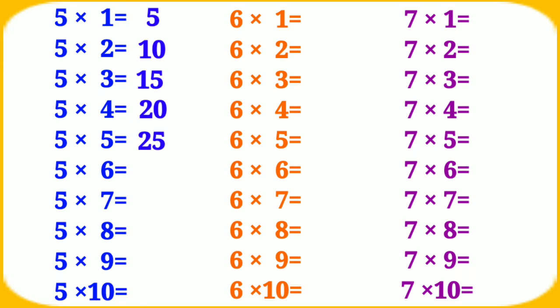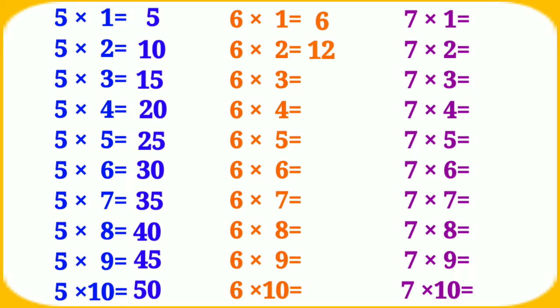5 sixes are 30, 5 sevens are 35, 5 eights are 40, 5 nines are 45, 5 tens are 50. Table of 6: 6 ones are 6, 6 twos are 12, 6 threes are 18.